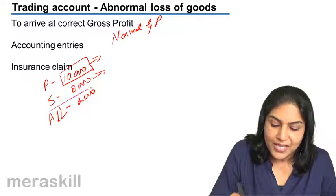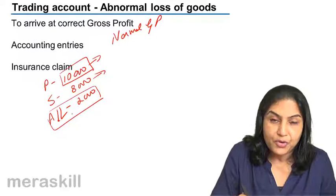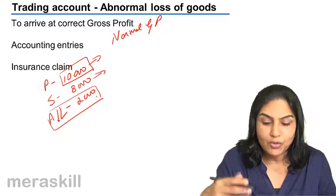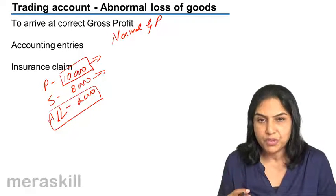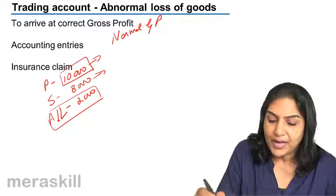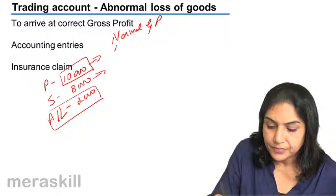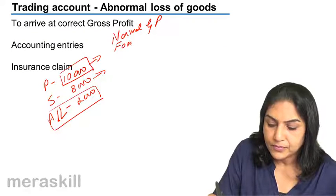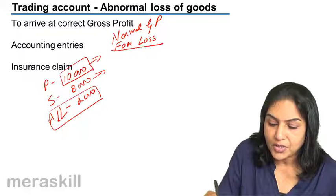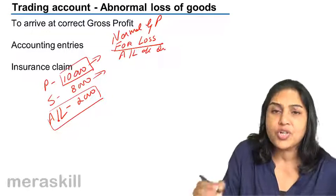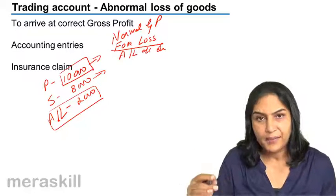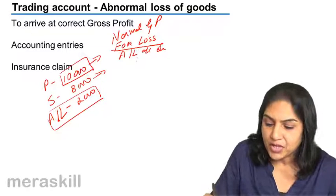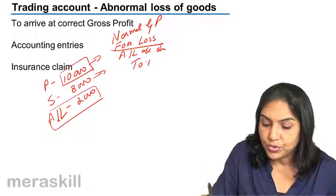So what do we do? This abnormal loss — the number of units of 2,000 which is abnormally lost — is reduced from the cost of purchases. What is the accounting entry for the loss? For loss, we say: abnormal loss account debit, or goods lost by fire debit, goods lost by flood debit — whatever is the abnormal loss account — debit to trading account.